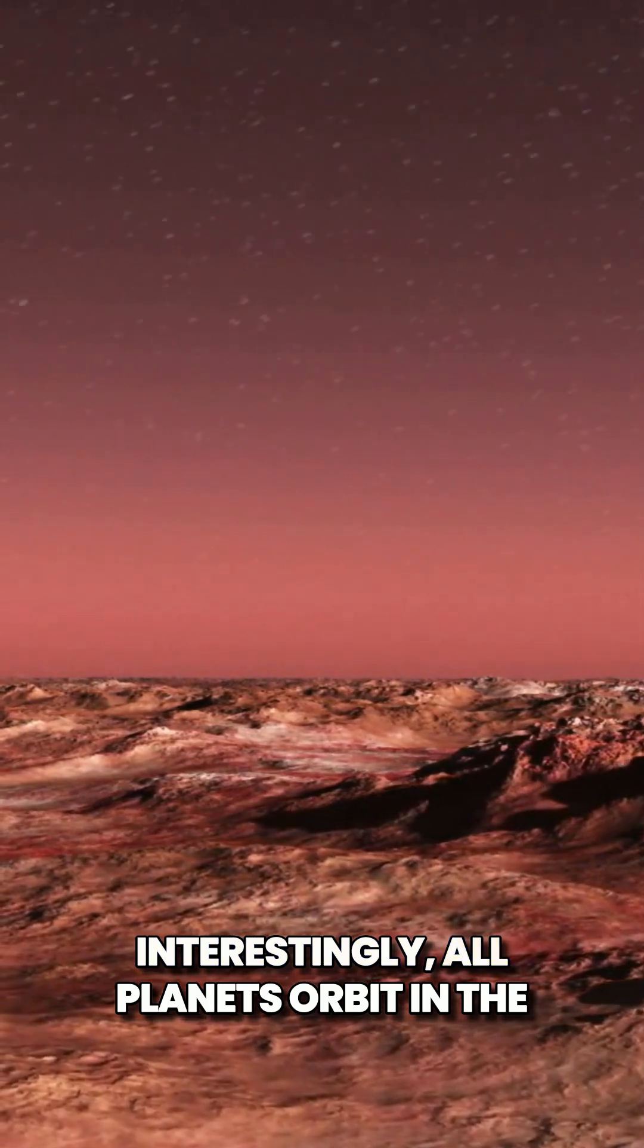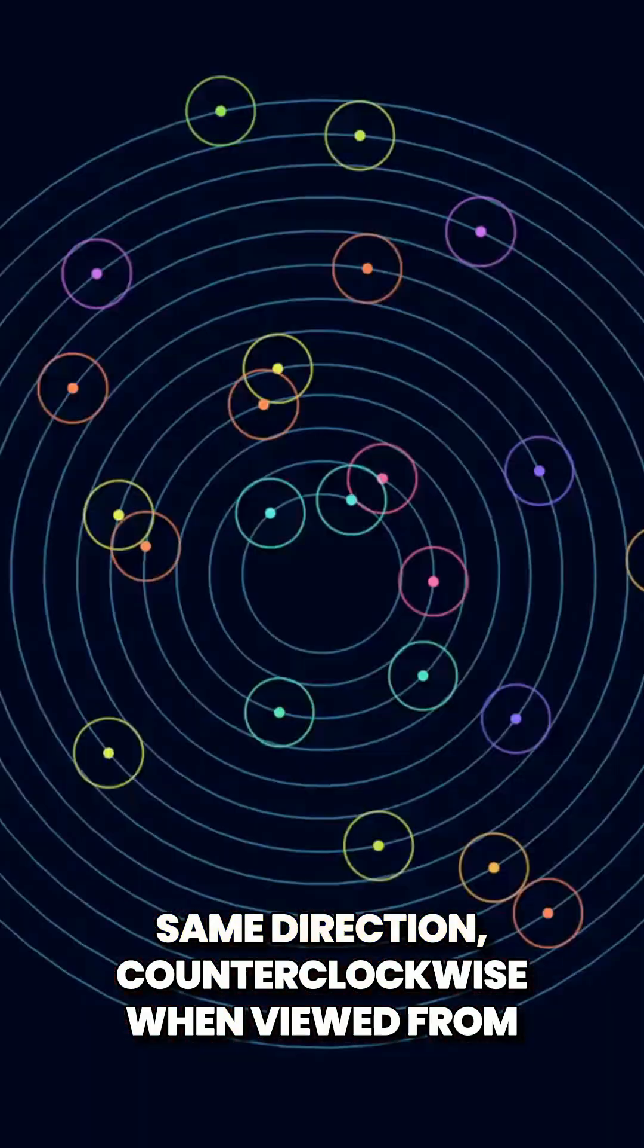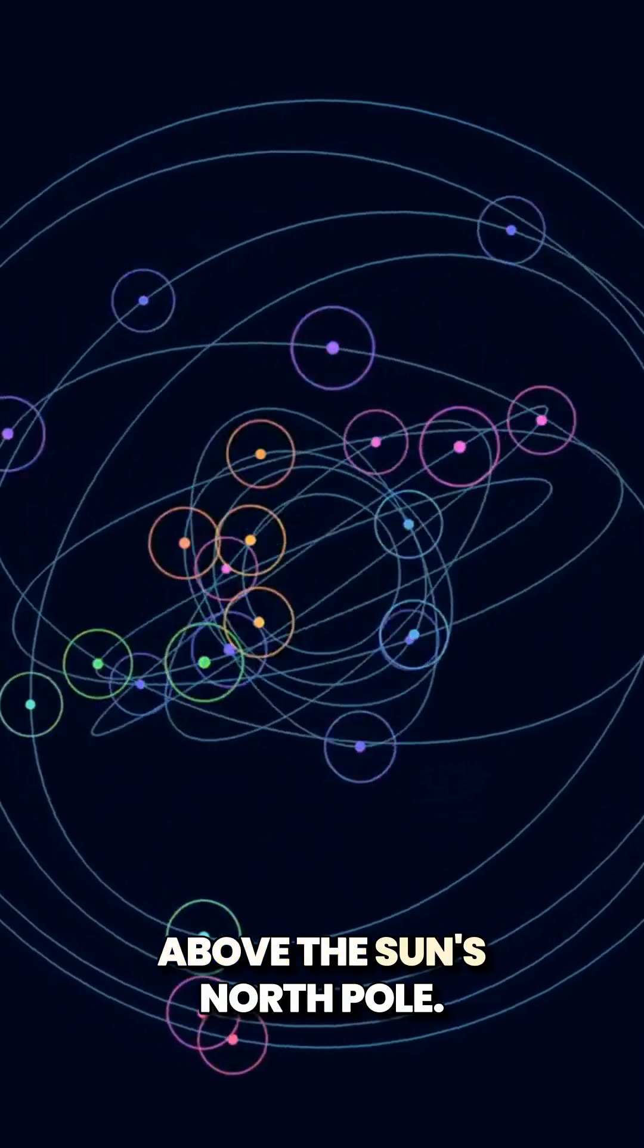Interestingly, all planets orbit in the same direction, counterclockwise when viewed from above the sun's north pole.